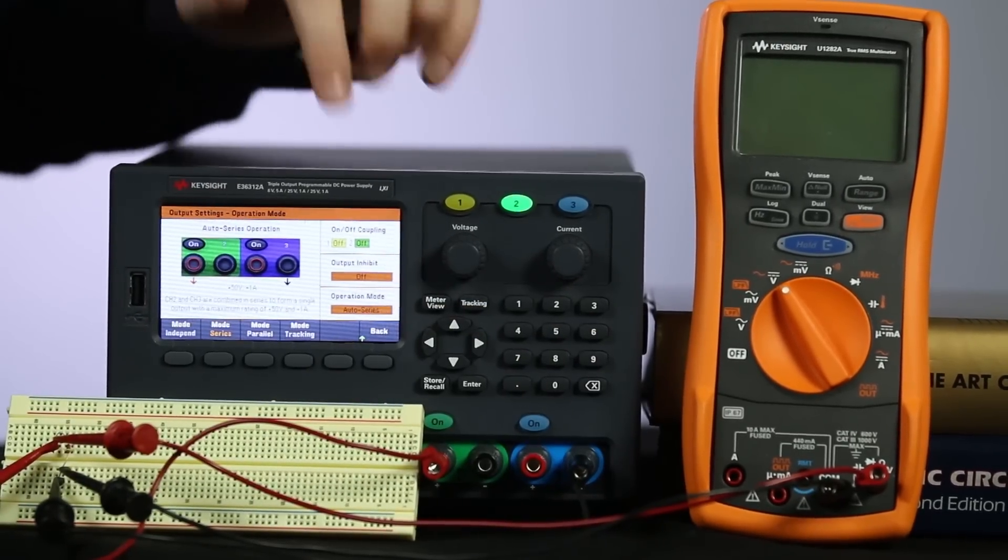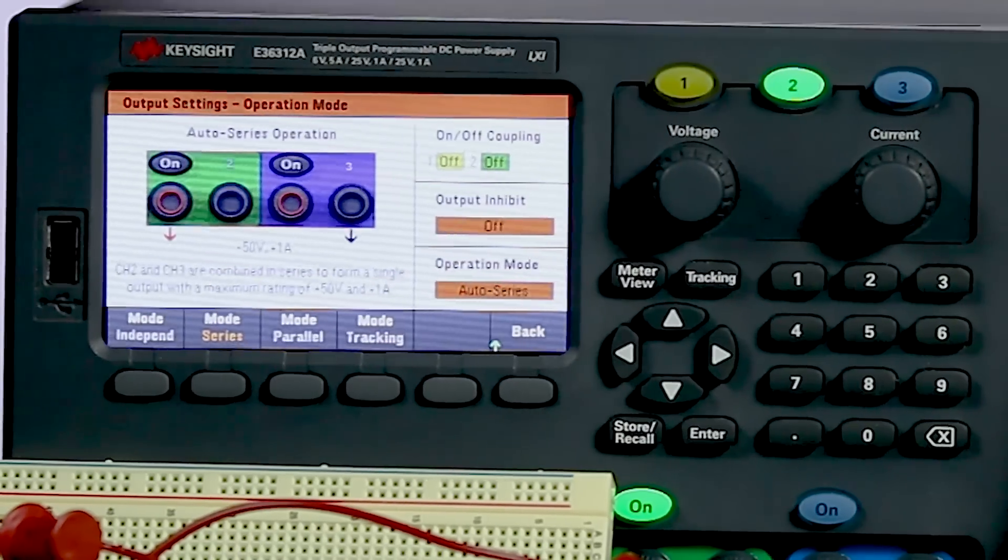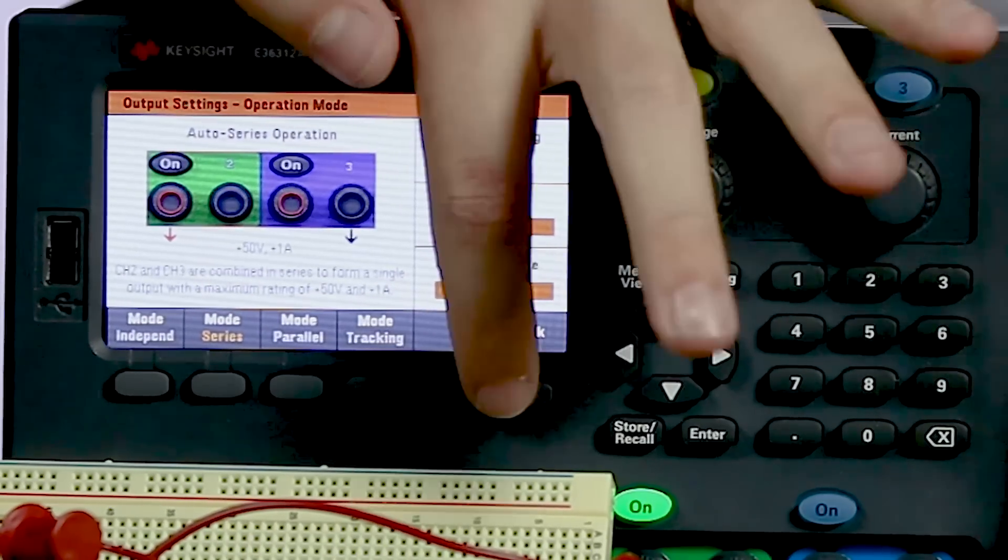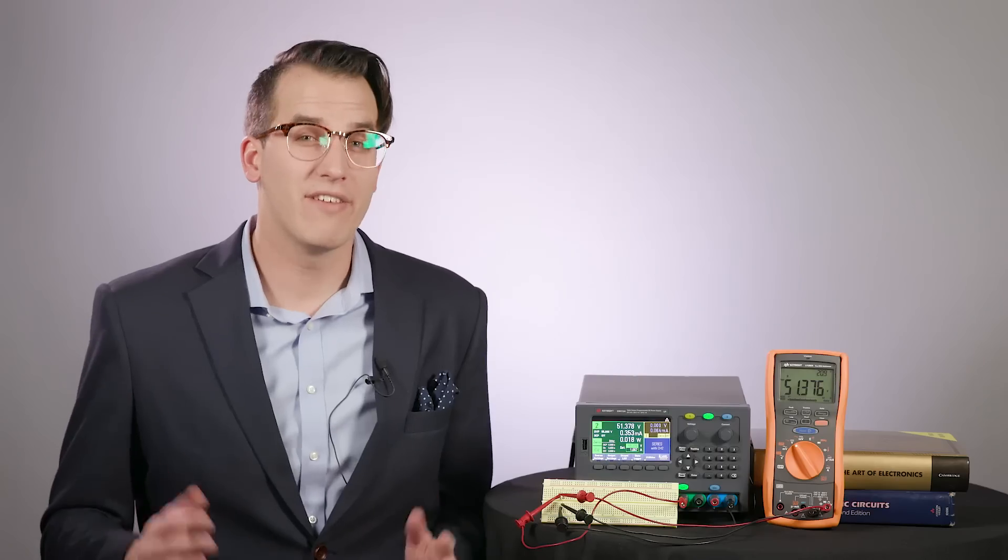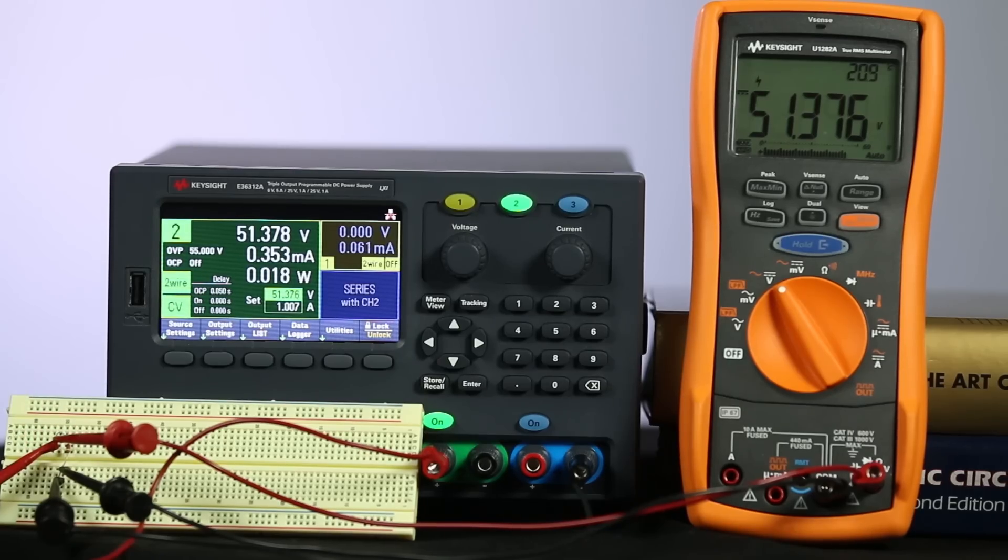Usually, you turn the output voltage off before you do that. I'm going to turn it on. We're going to go back to channel 2's menu here. I'm going to back out of these menus. So, you can see that I'm getting 50 volts across my resistor and my DMM does confirm that.